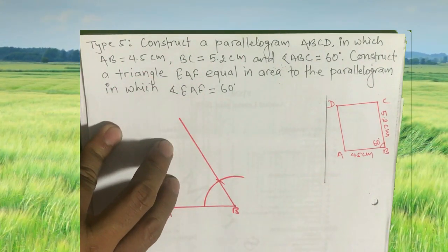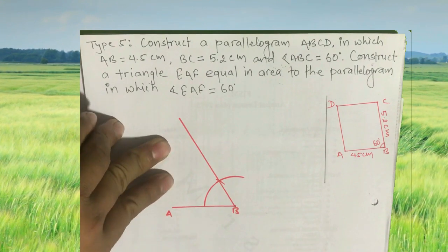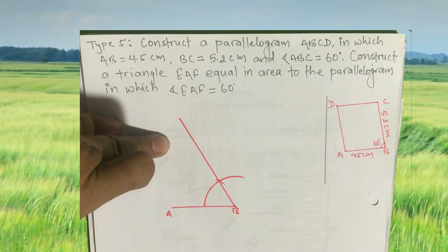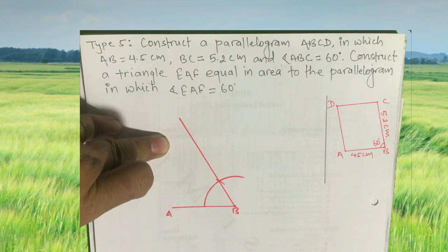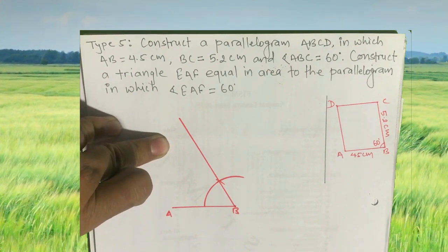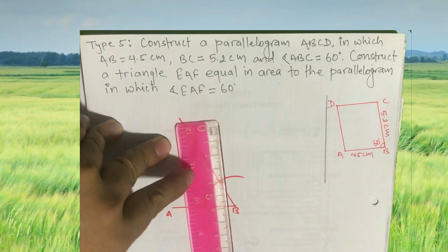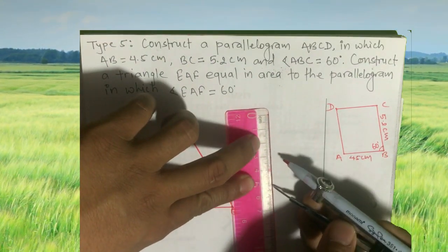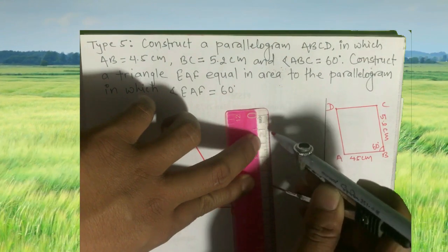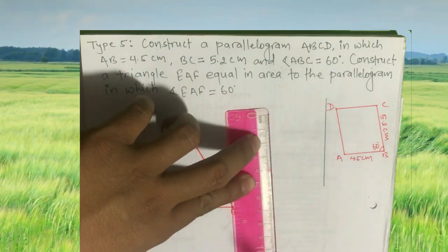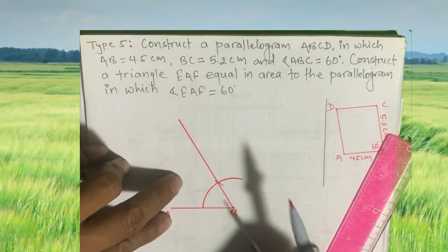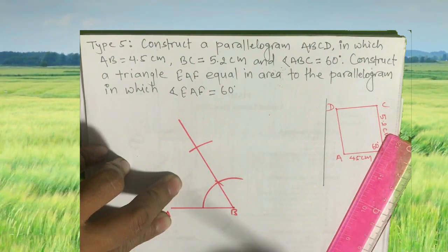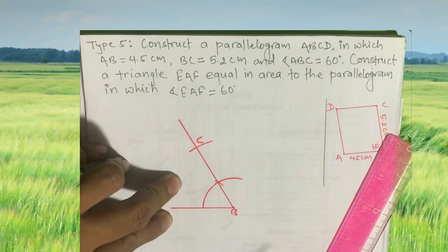Now you have your 60 degree angle. Point C is 5.2 centimeters far from B, so make an arc of 5.2 centimeters from B. This intersecting point is your point C.